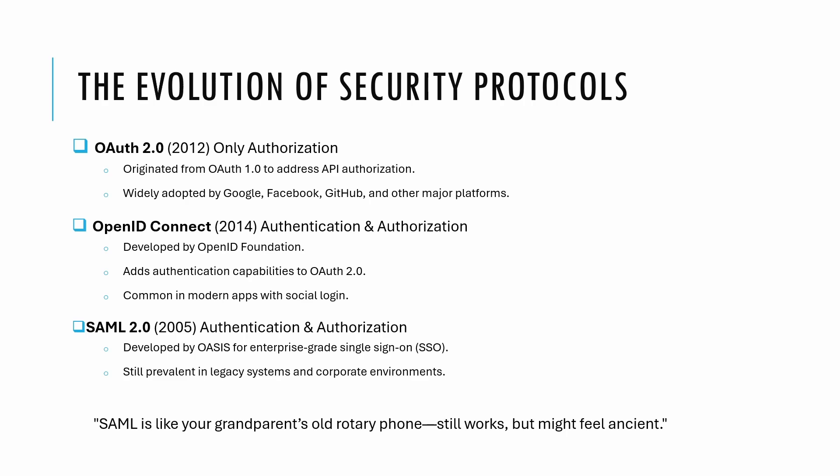SAML 2.0 is the oldest of the three, released in 2005. SAML was developed for enterprise-grade single sign-on. It's widely used in corporate environments where employees log in once to access multiple applications like HR systems, email, file storage, and ERP and CRM solutions. A fun fact: SAML is like your grandparent's rotary phone — it still works but it's a bit clunky by today's standards.